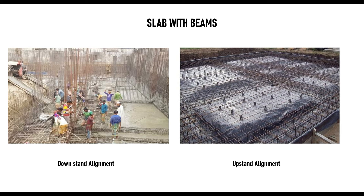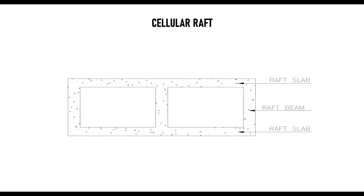The last type is the cellular raft foundation, which comprises two concrete slabs interlocked together using raft beams, forming a box shape. You have an upper slab and a lower slab connected together. This type is used where the ground is likely to settle significantly, or where there are heavier loads from the superstructure — in those situations, a cellular raft is highly recommended.